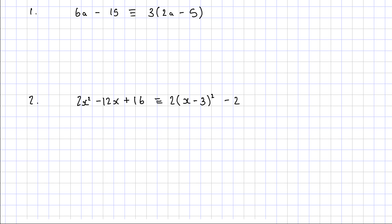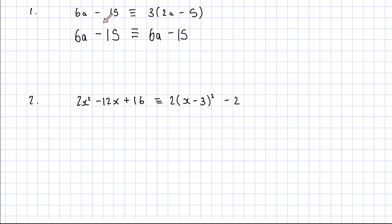Another thing about identities is that we can't solve them. Let me just multiply out the right hand side: 6a minus 15, and this is identical to 6a minus 15. You can't solve identities — if I try to collect the a's together on one side and the numbers on the other side, what I will be left with is 0 is equal to 0.